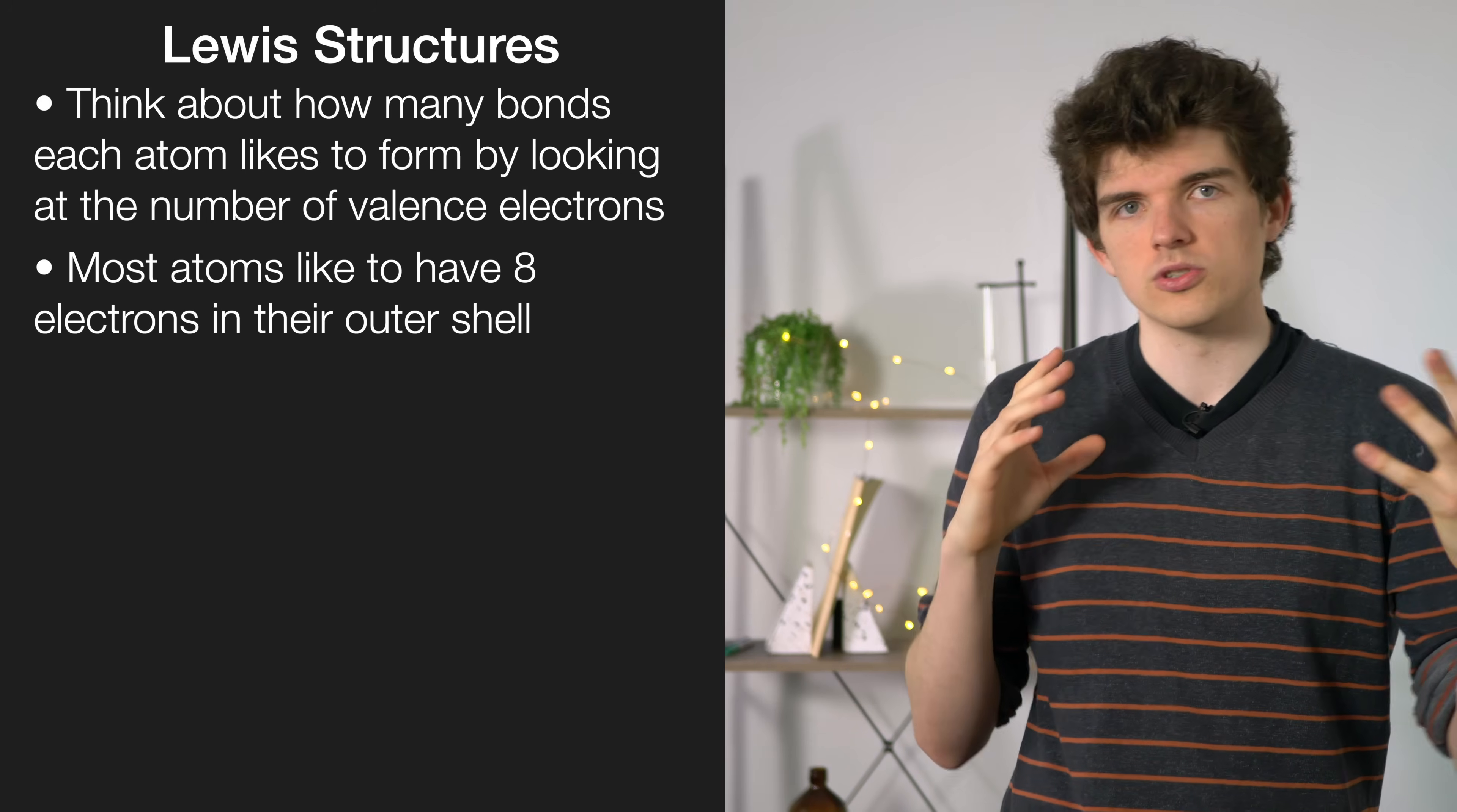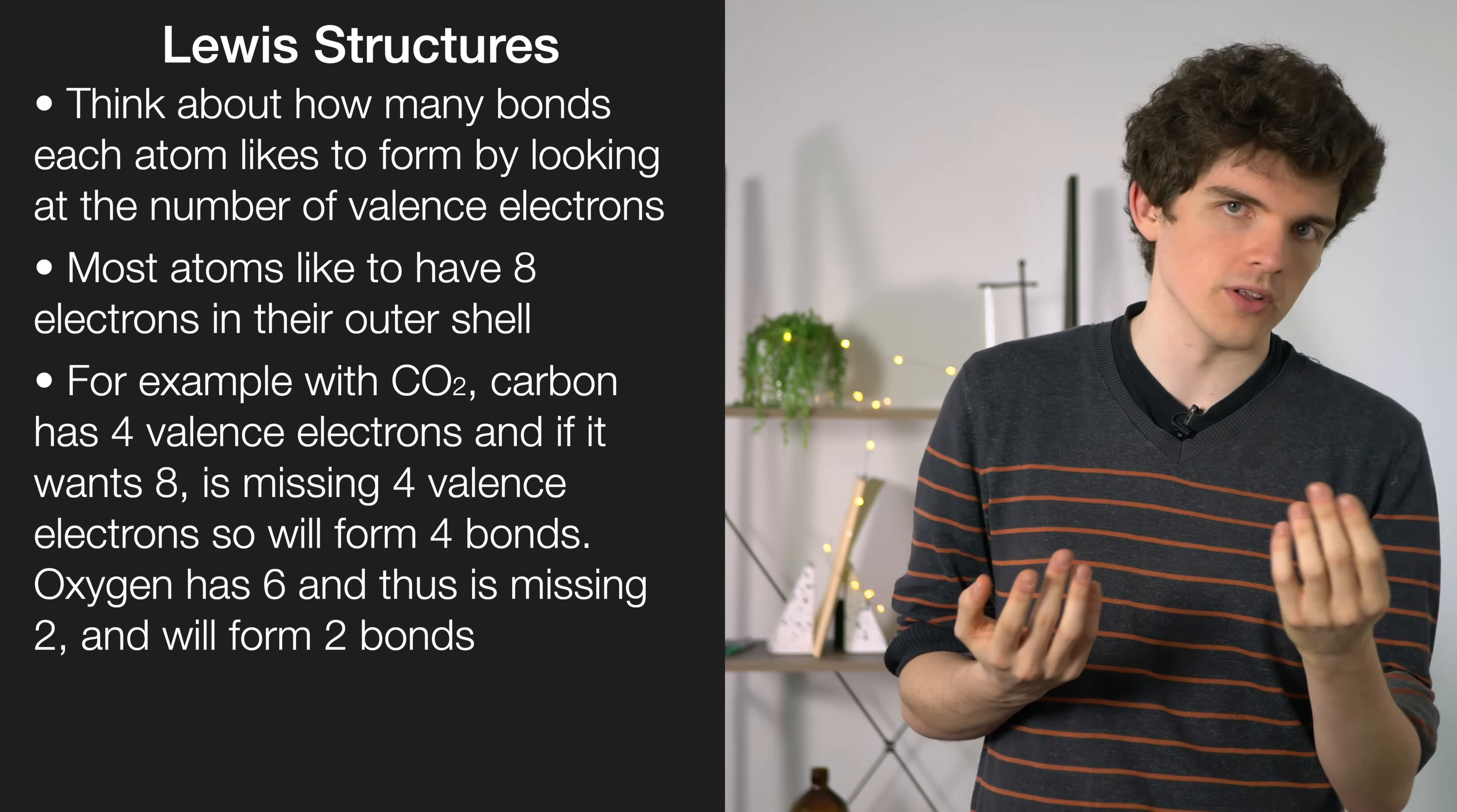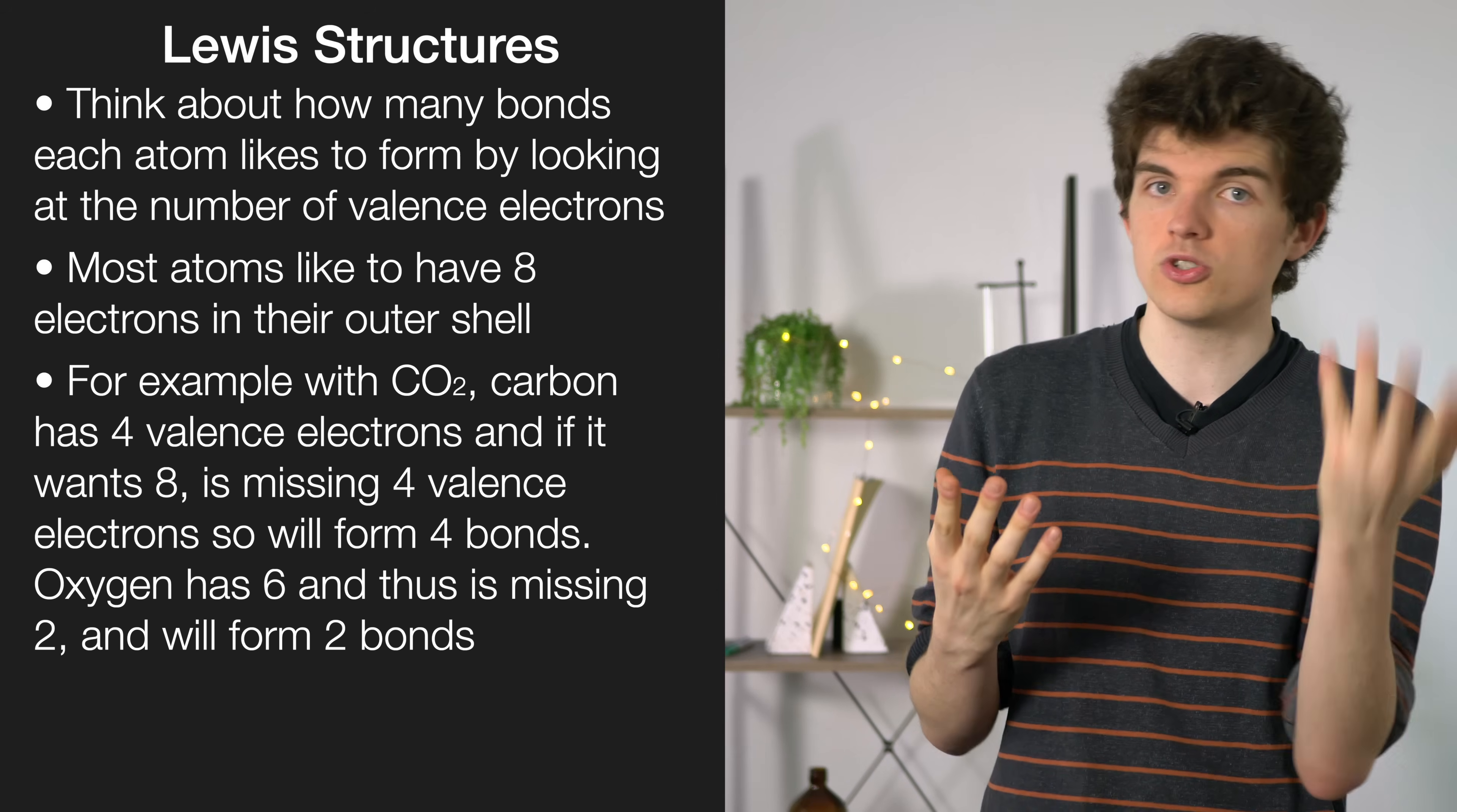If we look at a molecule like CO2, for example, carbon has four valence electrons. It's missing four valence electrons, which means it will form four bonds. Oxygen has six valence electrons. It's missing two valence electrons, so it will like to form two bonds.